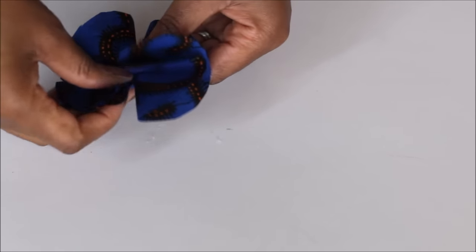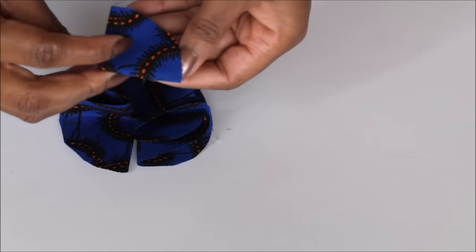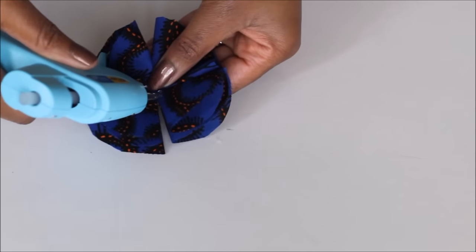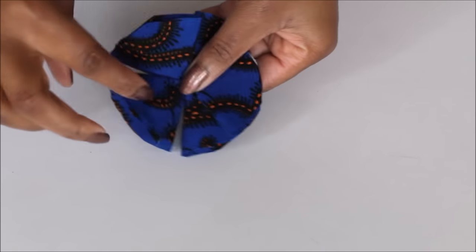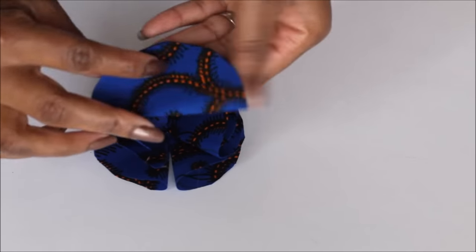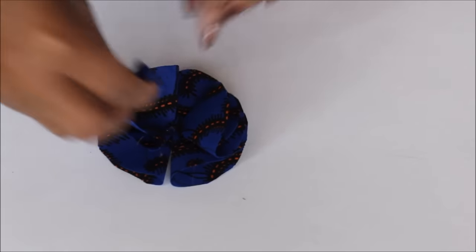So you're done with the first layer, we're going to continue to the second layer, and we will glue. So each petal is being separated by lines, so that is where you place the next set of petals. So place some glue just on the line, and you will add the next petal there.